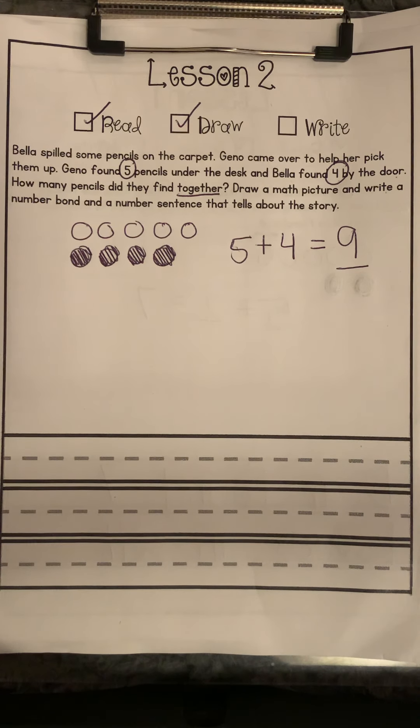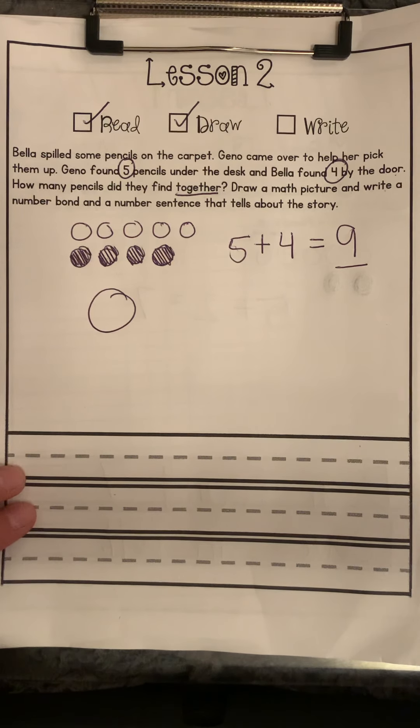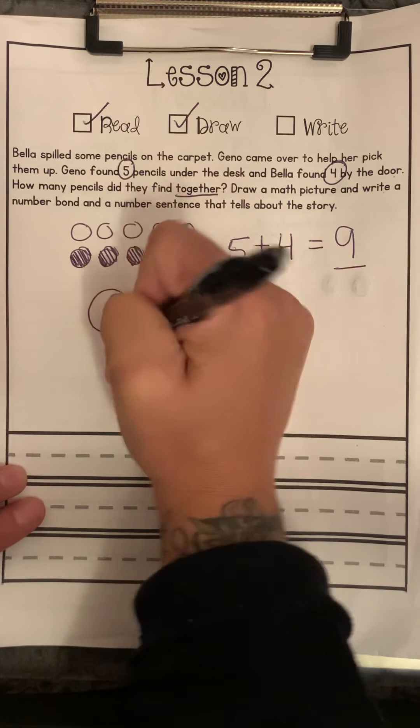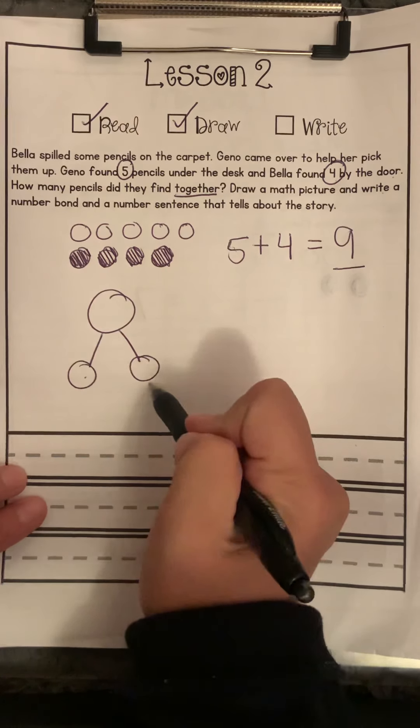They would also like us to show a number bond. So we know that the top of the number bond is going to be our whole number, or the number that is all of the numbers put together. And then we have two parts. So we have part, part, whole.